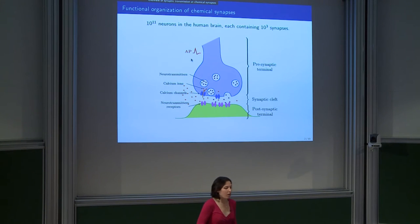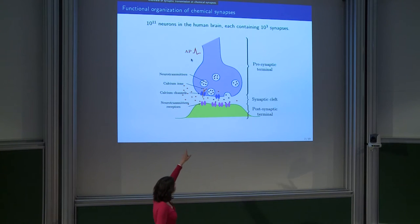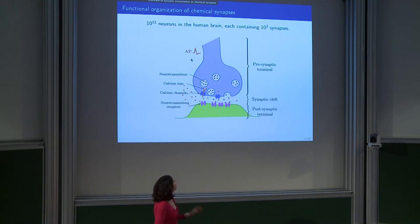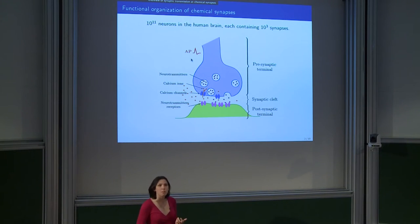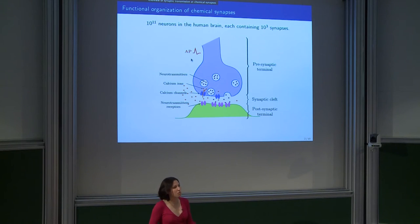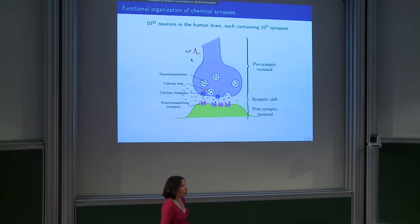This will trigger the entry of calcium ions within the terminal, shown as orange dots. Those calcium ions can go to bind to specific receptors localized on docked vesicles — the docked vesicles are the ones which are just opposed to the membrane.